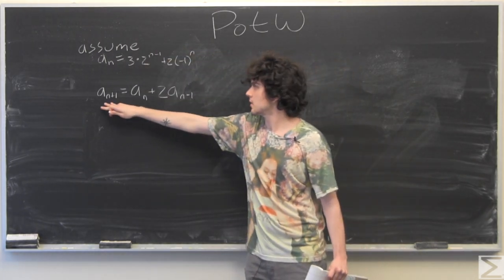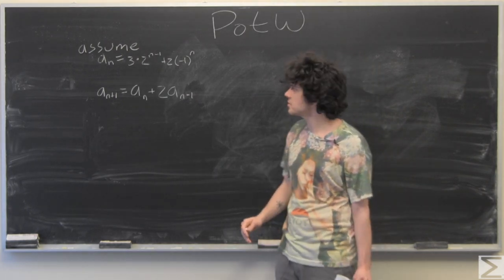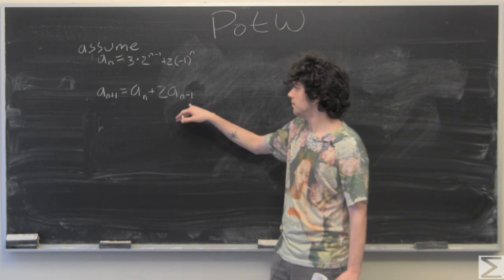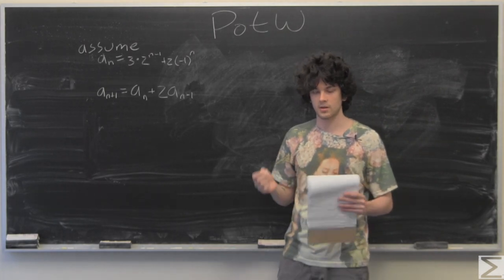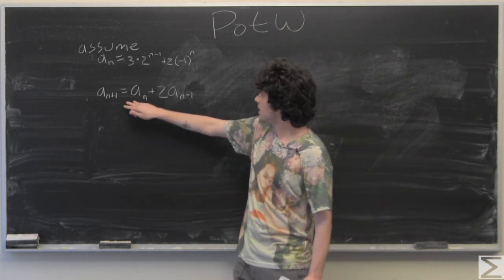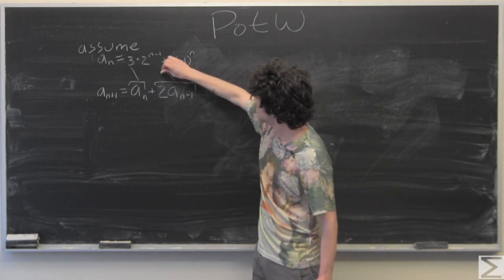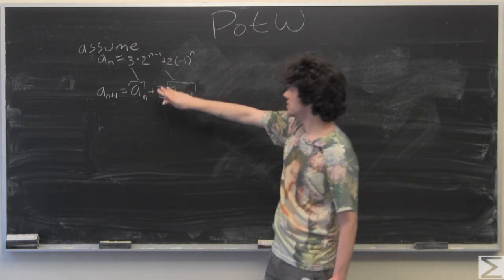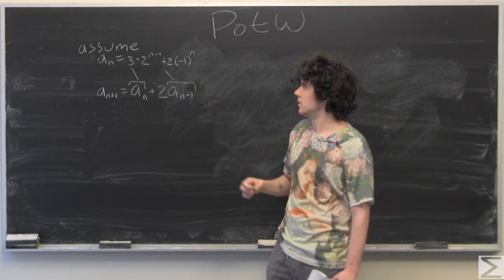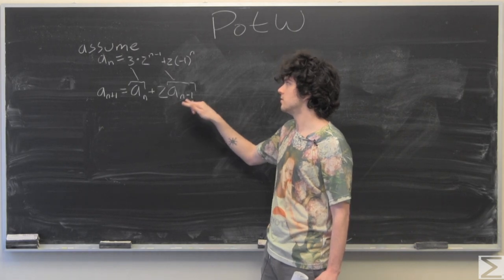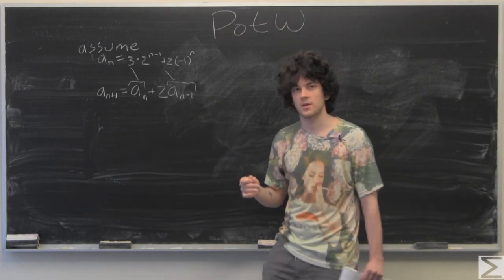So I'm just going to write that out. So here we have our n plus 1th term, and we notice that because of the recursion, we're able to put our assumption directly into our n plus 1th term, which is useful in an inductive proof. So now I'm going to substitute.